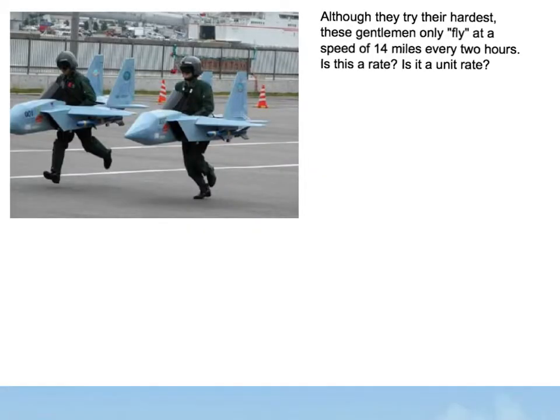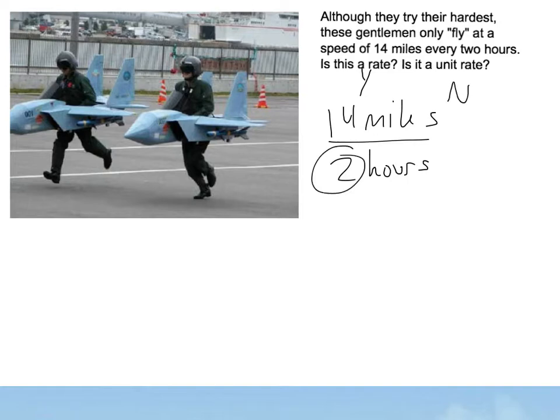Alright, so although they try their hardest, these guys only fly at a speed of 14 miles every two hours. Is that a rate? And is that a unit rate? Well, is it a rate? 14 miles every two hours. So miles and hours are different. So yeah, it's actually a rate. But is it a unit rate? No, it's actually not a unit rate because that right there is a 2. In order for that to be a unit rate, it would have to be a 1.